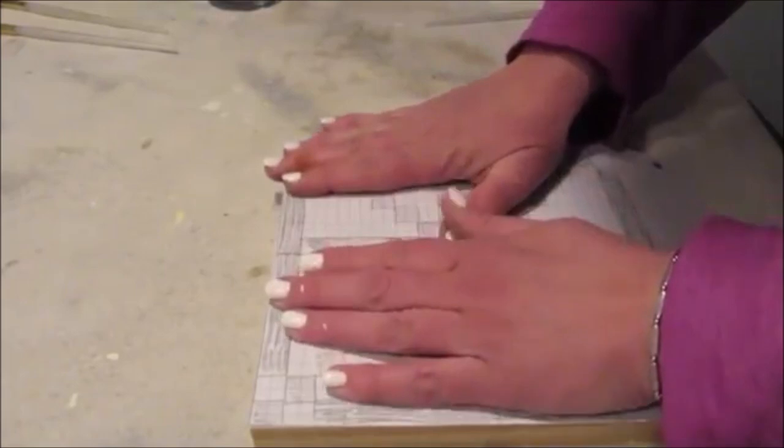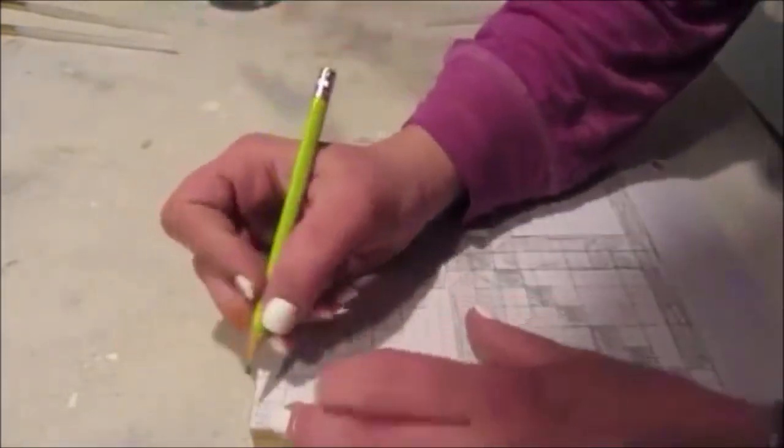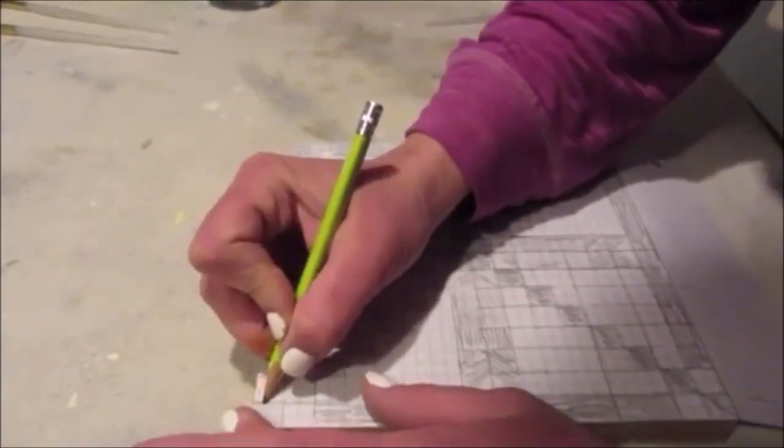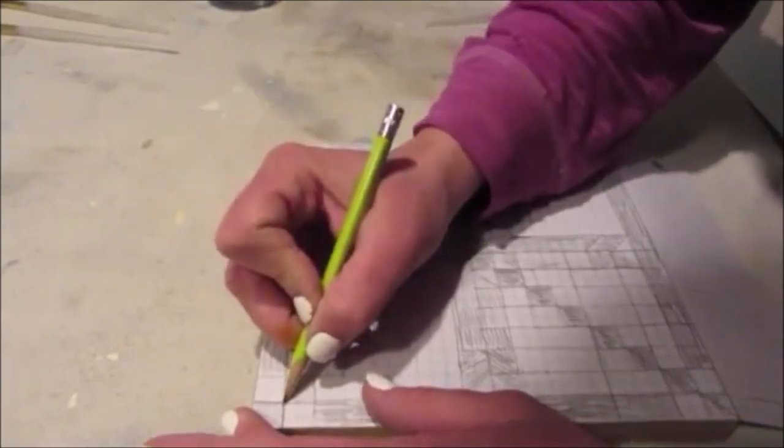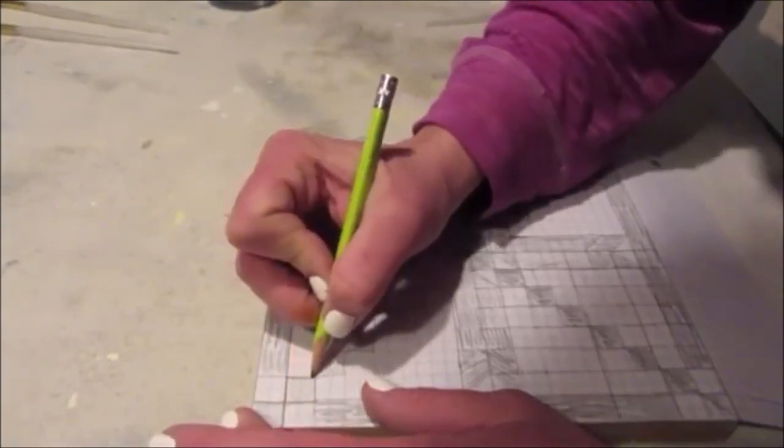After lining up the design on the board, I carefully held it in place and used a pencil to transfer the design simply by tracing over all the squares that I wanted painted.